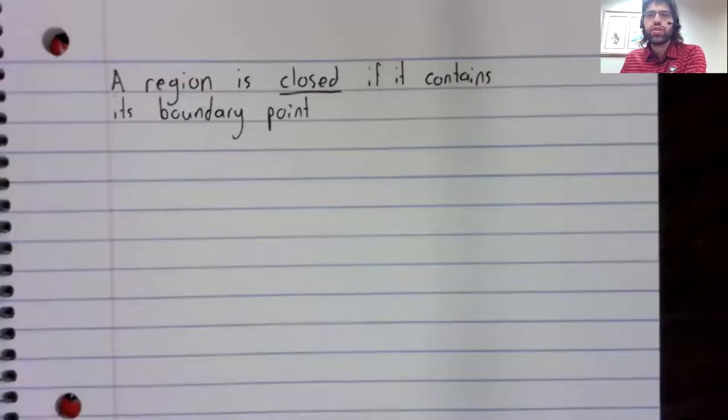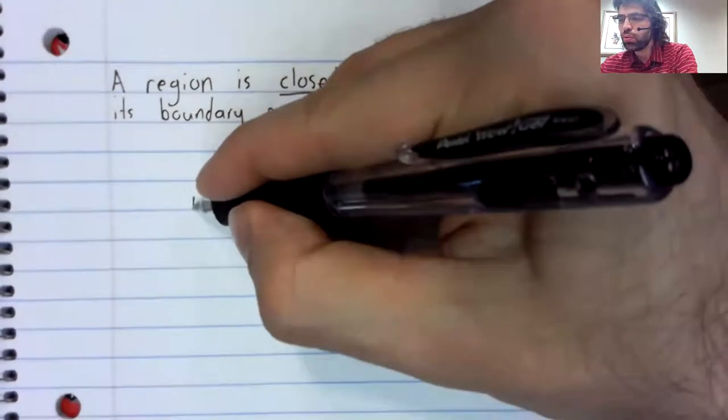We'll state this definition a little informally, but a region in the plane is closed if it contains its boundary points.